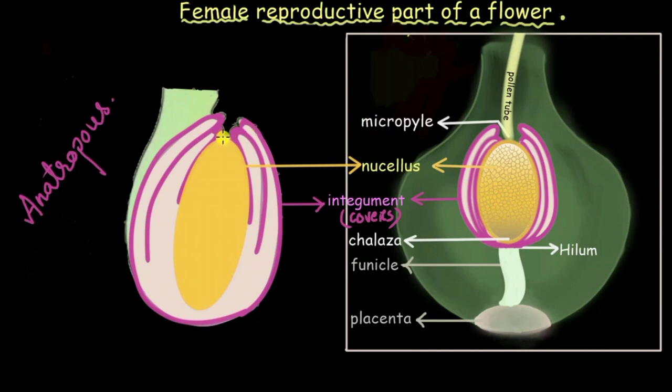So this is the micropyle end and the portion which is bang opposite to micropyle will be the chalaza end right. So let us label them as well.